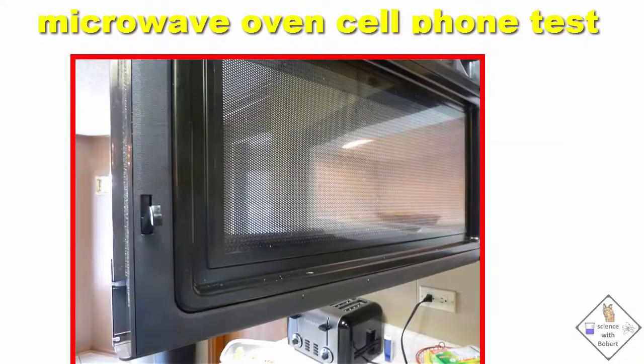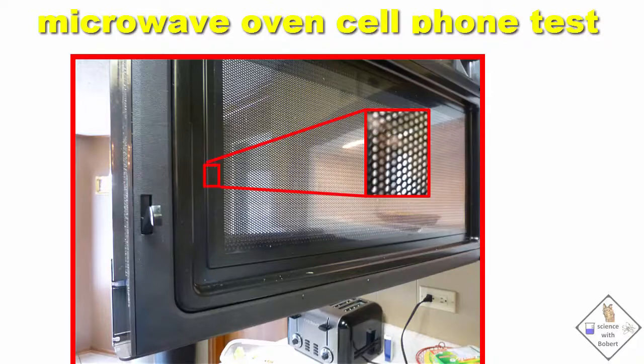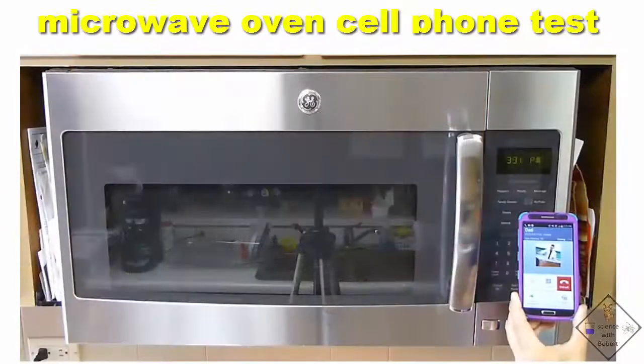One last test. A microwave oven should block microwaves. The door to a microwave oven has tiny holes, but the holes are a lot smaller than a honeybee, so the microwaves are blocked. Cell phone signals are even larger than microwaves, so if we put a cell phone in a microwave oven and close the door, the phone should not ring, right? Let's try it.